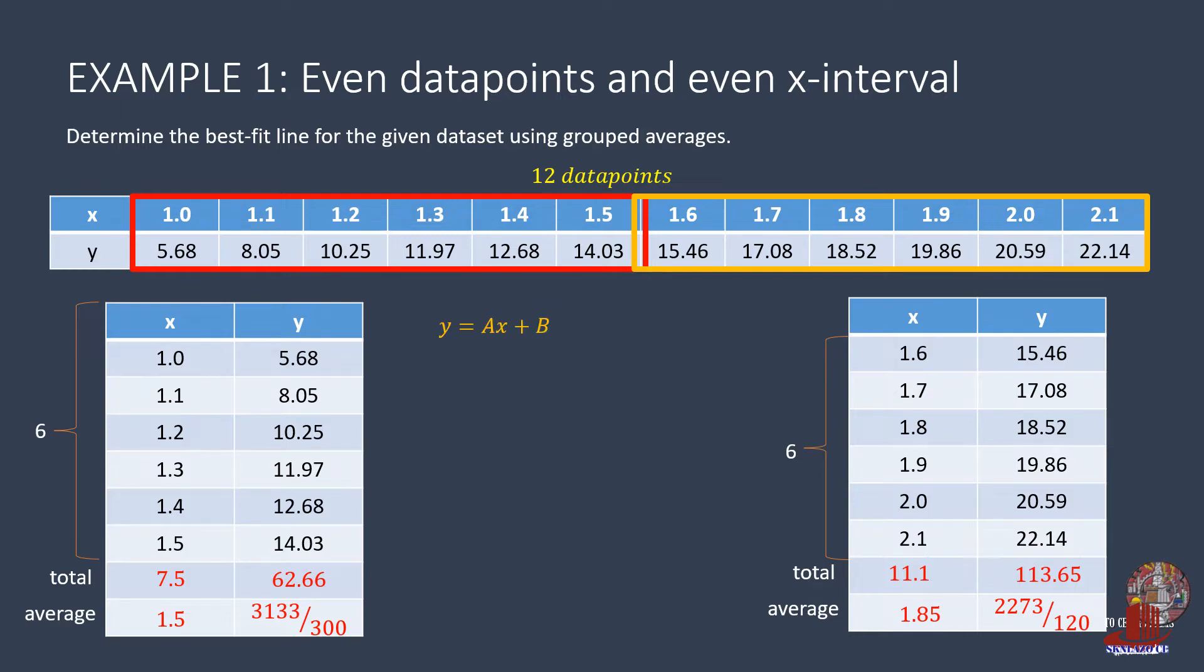Using the linear equation y as ax plus b, the average is taken from the first group for the first equation, where we get 3133 over 300 as equal to 1.5a plus b. From the second group, equation 2 is taken as 2273 over 120 as equal to 1.85a plus b.